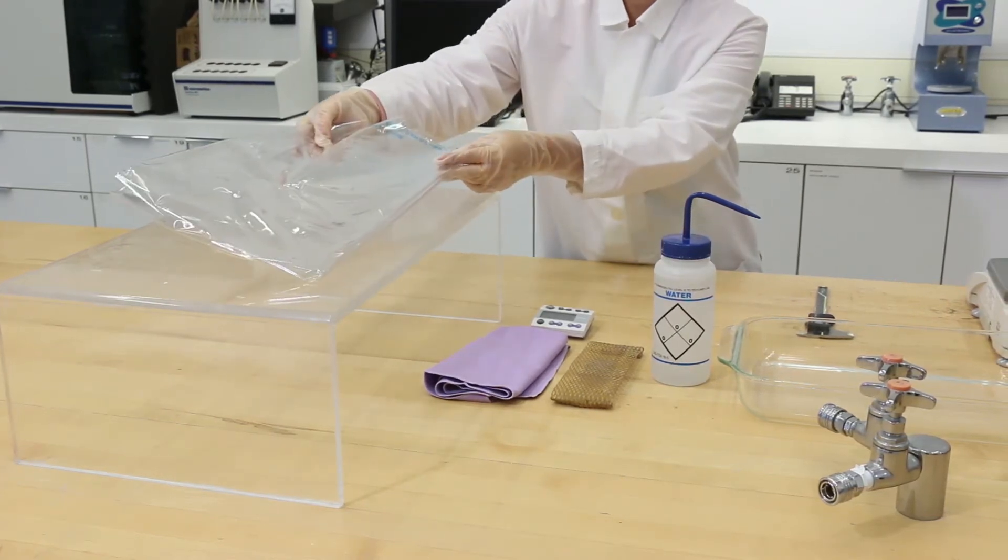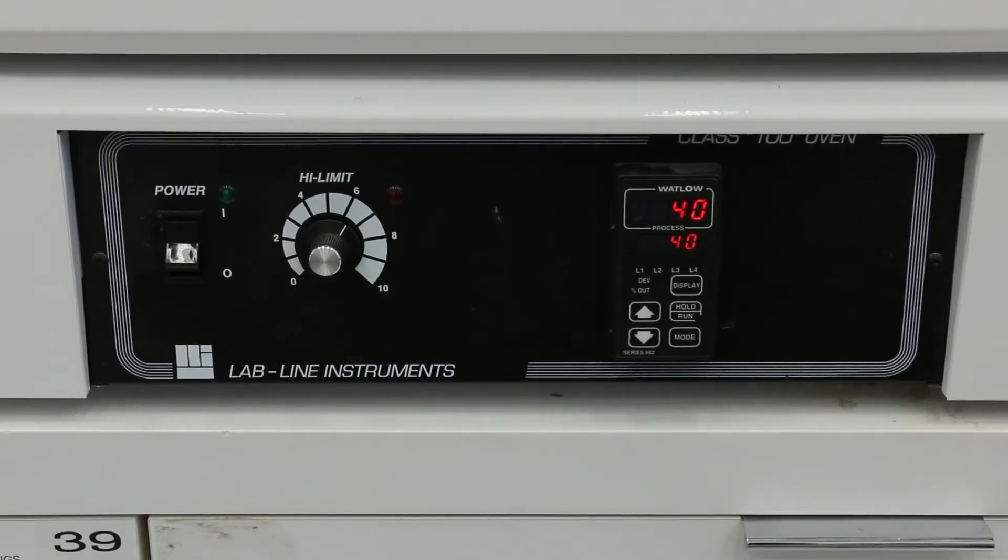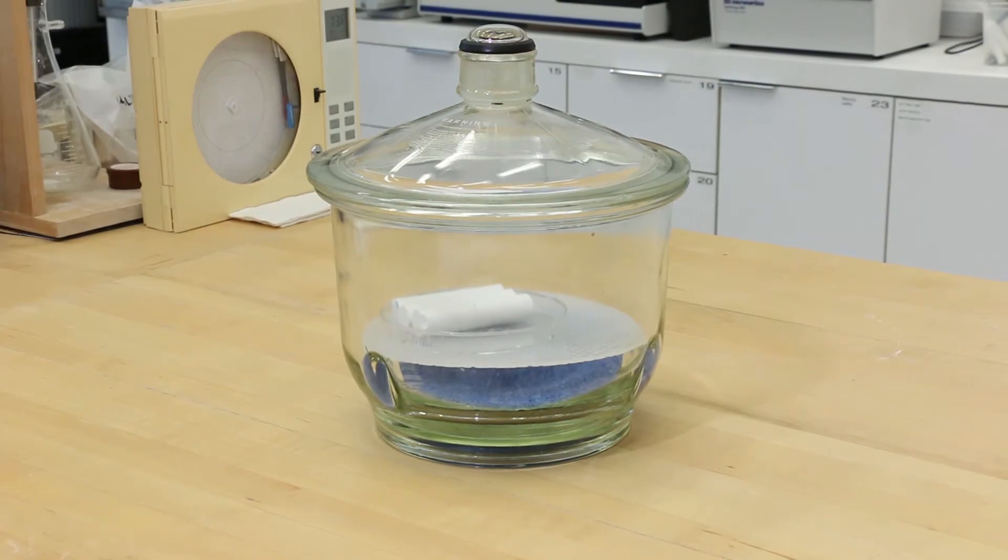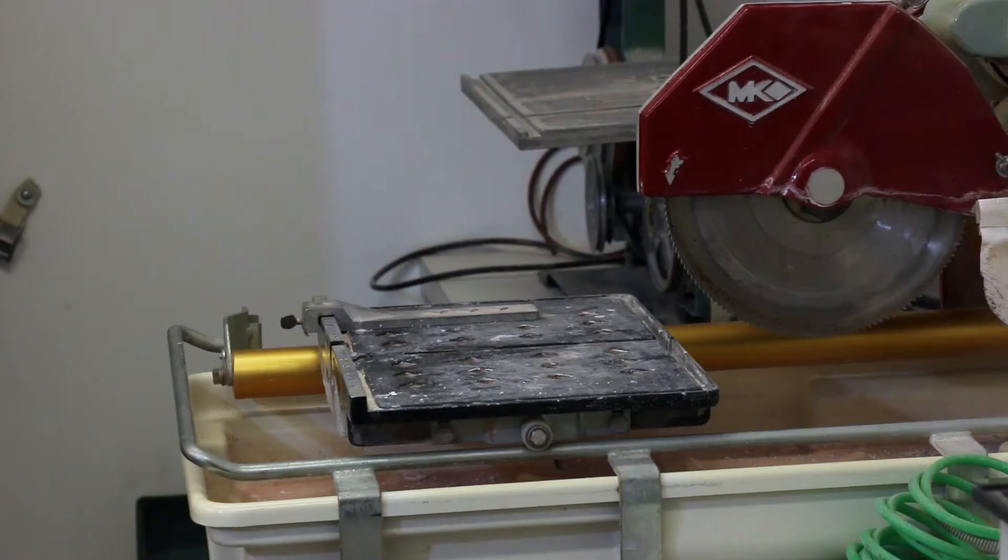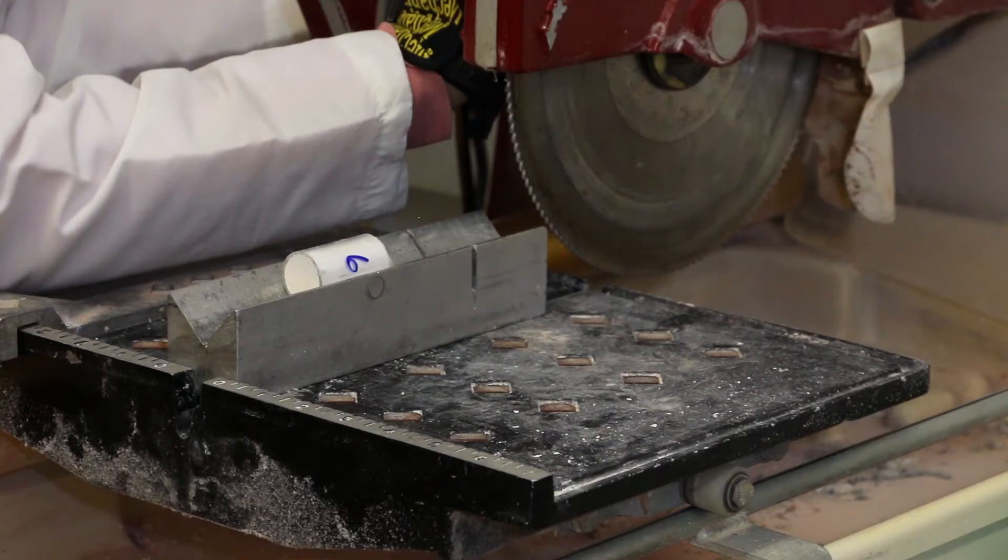4 mm plastic sheet to cover the open side of the plastic box, an oven, desiccator and desiccant, a tile saw, and a v-shaped specimen holder for cutting.